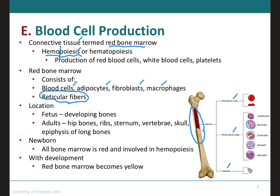Red bone marrow is present in the developing bones of the fetus and also in some adult bones, such as the hip bones (pelvic bones), the ribs, the sternum (breast bone), vertebrae, the skull, and at the ends of the humerus and the femur. In the newborn, all bone marrow is red and involved in hemopoiesis. With increasing age, much of the bone marrow changes from red to yellow, and that's when you start storing triglycerides to be used for energy whenever needed.